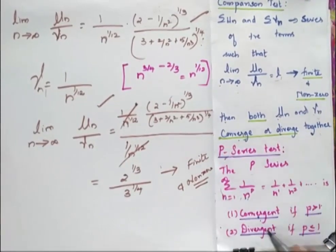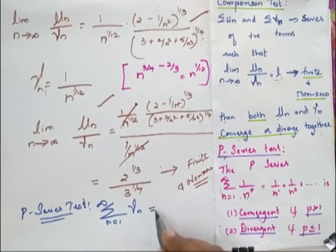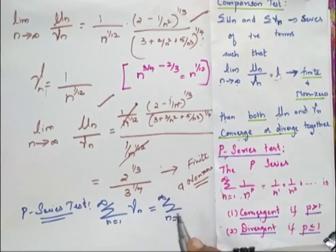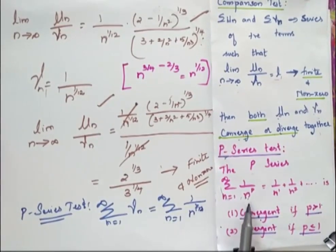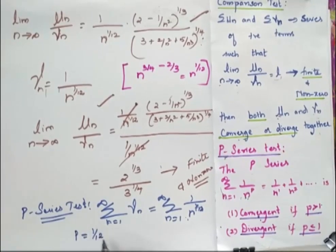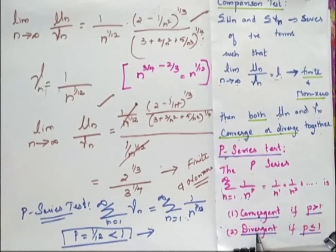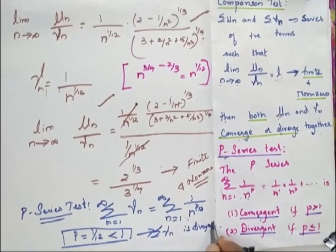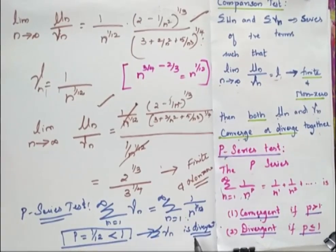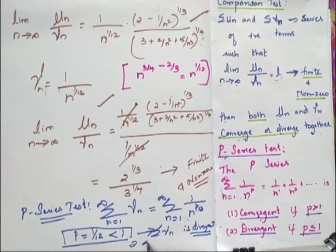Since the limit is finite and non-zero, I apply the p-series test to check convergence of the summation of v_n, which equals the summation of 1/n^(1/12). Comparing with the p-series, the value of p is 1/12, which is less than 1. Since p < 1, summation v_n is divergent. Therefore, by the comparison test, summation u_n is also divergent.